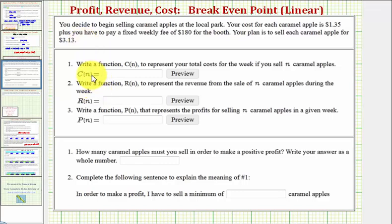We're first asked to find the cost, revenue, and profit functions as functions of n, where n is the number of caramel apples that you sell per week. And then we're asked a question about the break-even point.